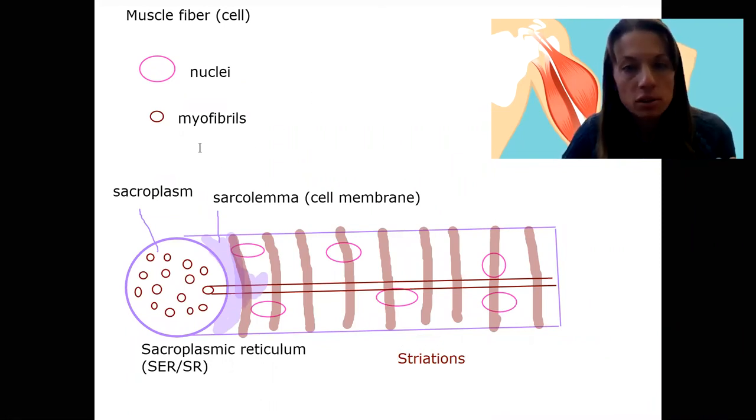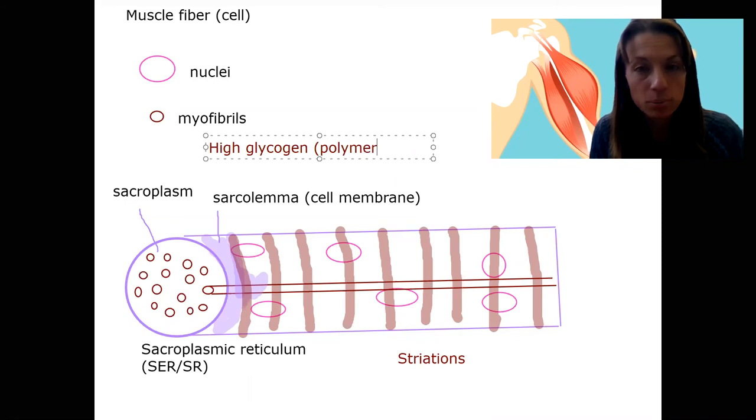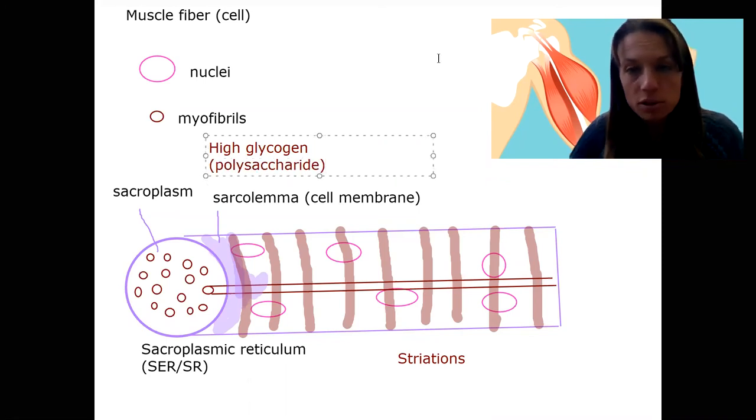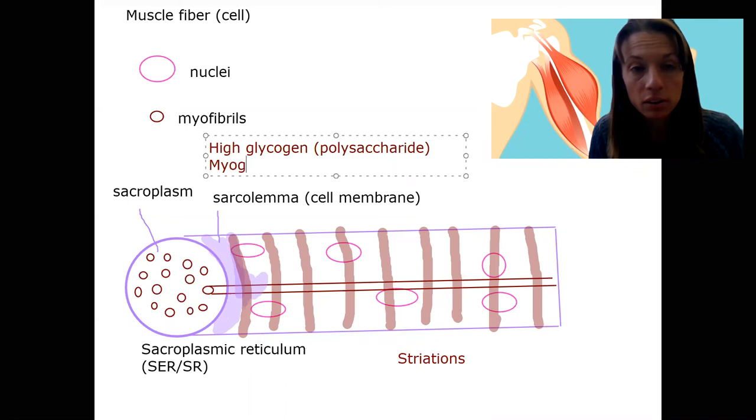Lastly, two more characteristics of muscle cells. There's going to be high glycogen levels. Glycogen is a polymer, a polysaccharide, because it is. It's made up of multiple glucose molecules. And the other thing, we're going to have myoglobin. This is a lot like hemoglobin, but it's a single subunit. It's going to be used to carry oxygen in the muscle cell. Myo is also a prefix for muscle.